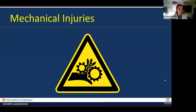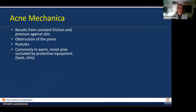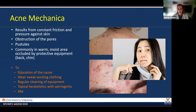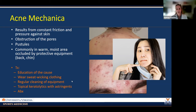Now we're moving into skin findings resultant from mechanical changes — starting with the bread and butter of derm: acne. Acne mechanica results from constant friction and pressure against the skin, which obstructs the pores and starts forming pustules. It's commonly found underneath protective equipment or chin straps where people sweat — dark, moist, warm — and bacteria love to grow there. Since COVID, many people got this underneath face masks. Treatment involves education about the cause, sweat-wicking clothing, regularly cleaning equipment, using keratolytics and astringents, and in severe cases, antibiotics.